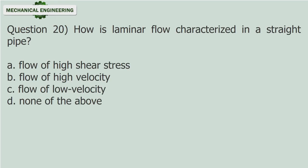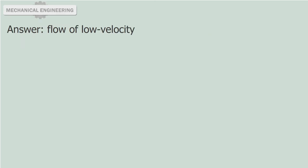Question 20: How is laminar flow characterized in a straight pipe? A. Flow of high shear stress. B. Flow of high velocity. C. Flow of low velocity. D. None of the above. Answer: Flow of low velocity.